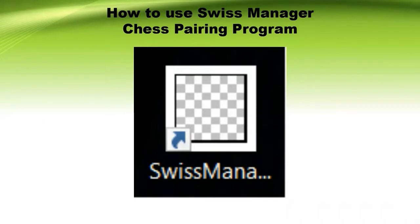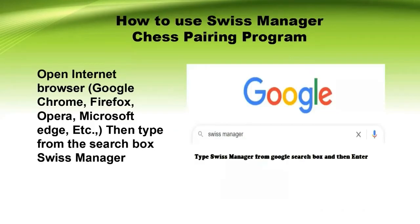First, we will download the Swiss Manager Pairing Program using our internet browser. You can use Google Chrome, Firefox, Opera, Microsoft Edge, or any other internet browser available on your computer. Then type Swiss Manager in the search box and hit Enter from your keyboard.